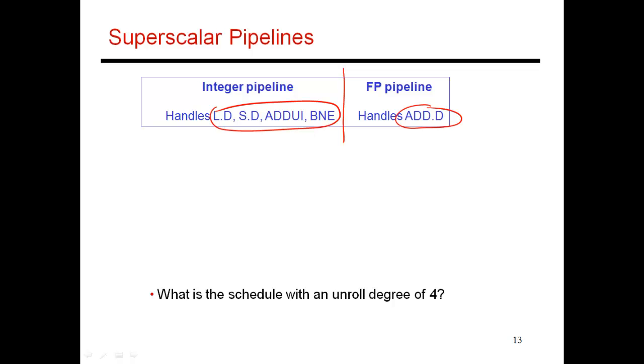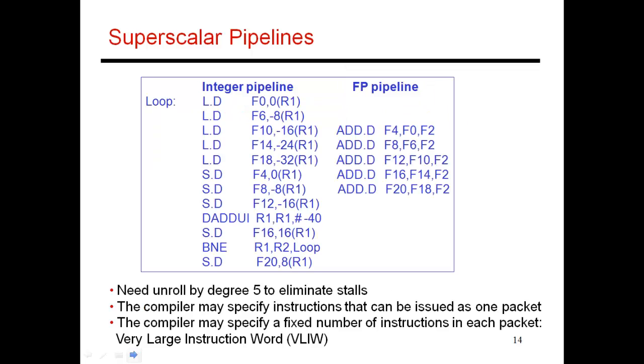Now let me take that same loop that I had before and let me try to unroll it a few times and execute it on this pipeline. I've unrolled it by a degree five, and the reason for that will be made clear shortly. If I'm unrolling by degree five, I have these five loads that happen up front. They are all being sent to my integer pipeline. After that, my floating point pipeline is idle for a couple of cycles.